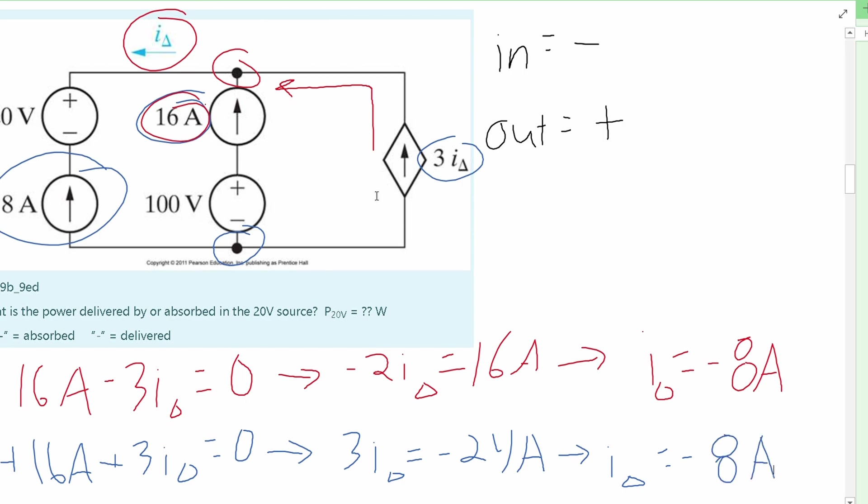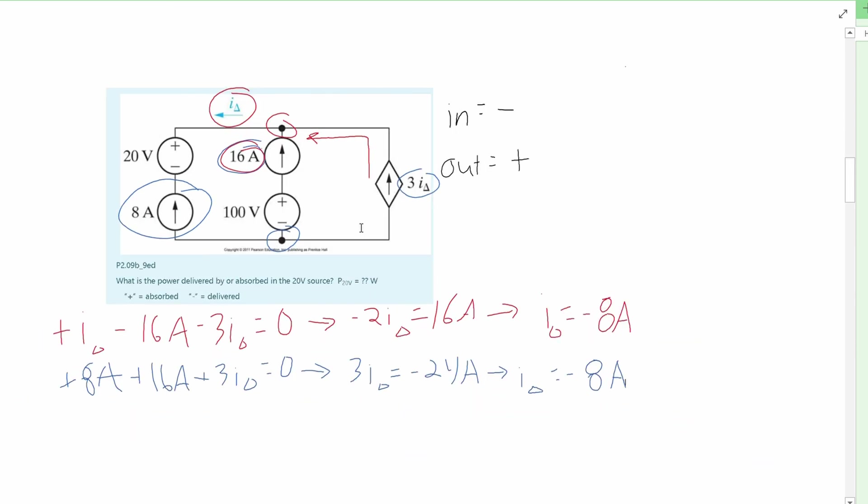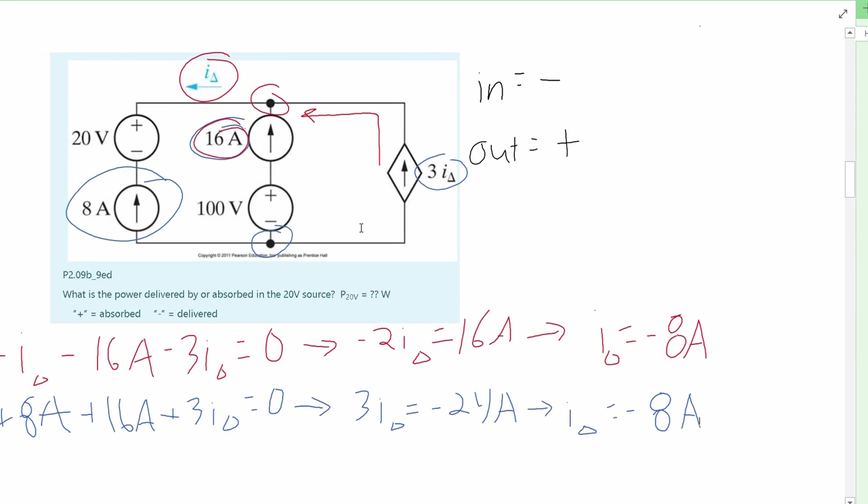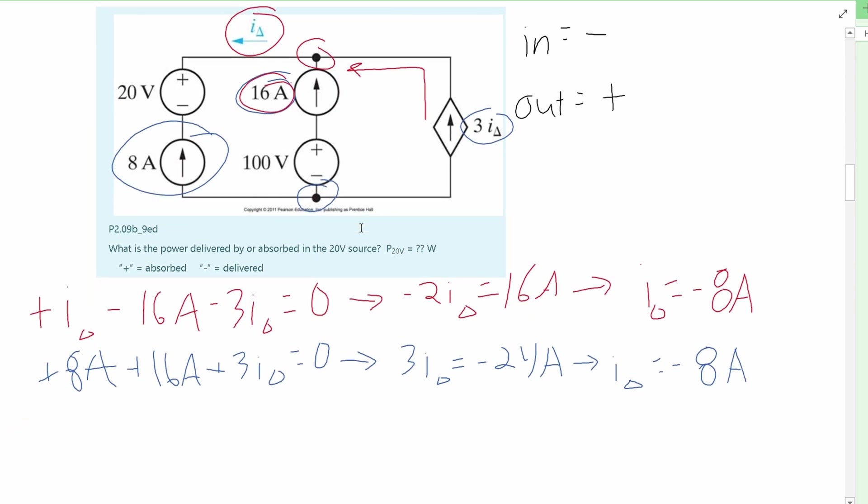So now that we know the actual current flowing through this entire problem is negative 8 amps, we can just find the power by using the power formula. The power formula is that power is equal to volts times amps. So we can just plug in the volts that we want to find and then our amps that's running through the system.